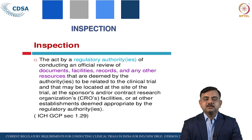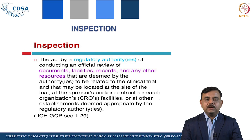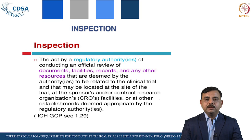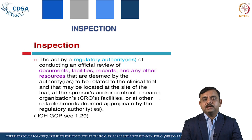What is meant by inspection? Inspection is not defined in our New Drug and Clinical Trial Rule, but as per ICH GCP section 1.29, inspection is the act by regulatory authorities — in India, the state licensing authority or CDSCO — of conducting an official review of documents, facilities, records, and any other resources at the site of the trial, sponsor CRO, or sponsor's facility.